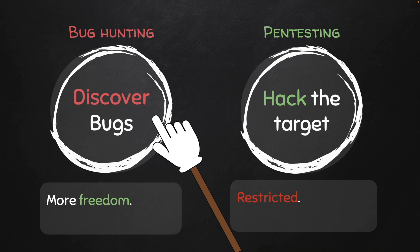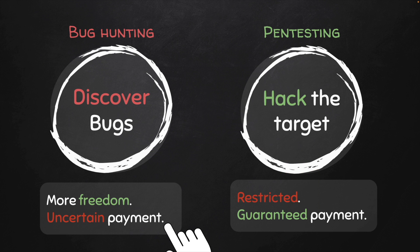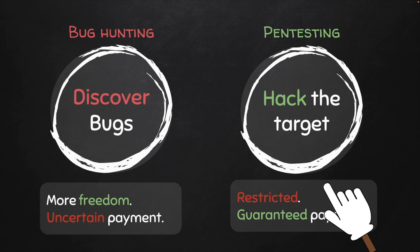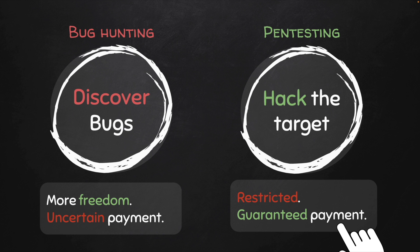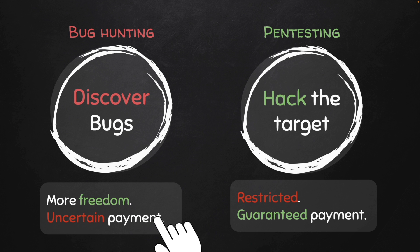Because of this freedom in bug bounty programs, there is also an element of uncertainty. Your payment is not guaranteed — you could be testing for a certain bug for months with no success, or you might discover a bug after a few months, submit it, and find out someone else has already reported it. Therefore your bug is a duplicate and you will not be paid. This never happens with pen testing. The payment there is guaranteed because when the company approaches you, you agree on a specific payment based on the time taken. Regardless of what bugs you discover, and even if you don't discover any bugs, your payment is still guaranteed. So bug bounty programs give us freedom but payment is uncertain, whereas pen testing is more restricted but guarantees payment.